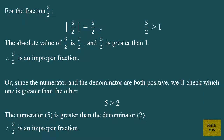For the fraction 5 over 2, the absolute value of 5 over 2 is 5 over 2, and 5 over 2 is greater than 1. Therefore, 5 over 2 is an improper fraction. Or, since the numerator and the denominator are both positive, we'll check which one is greater than the other. The numerator 5 is greater than the denominator 2. Therefore, 5 over 2 is an improper fraction.